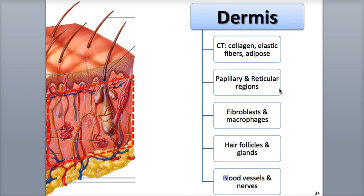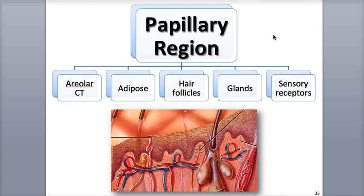The dermis is composed of two regions: a thin superficial papillary region and a thicker deeper reticular region. The papillary region is the thinner of the two and is located immediately deep to the epidermis. It consists of areolar connective tissue containing collagen and elastic fibers, and contains lots of surface area due to its dermal papillae — small nipple-like protrusions that connect with the lower surface of the epidermis, almost like jigsaw puzzle pieces. The dermal papillae contain blood vessels called capillary loops that nourish the cells of the region as well as the stratum basale cells of the epidermis.